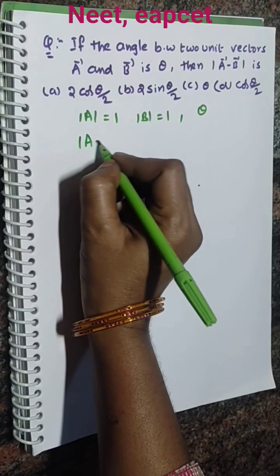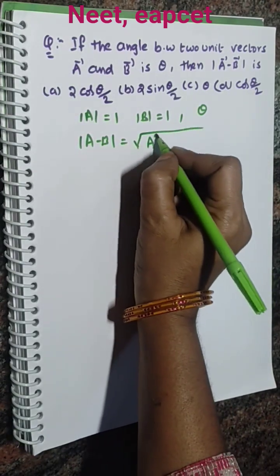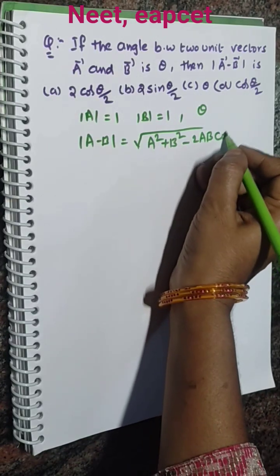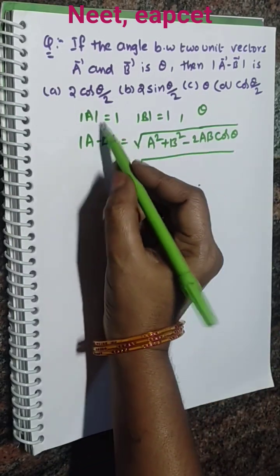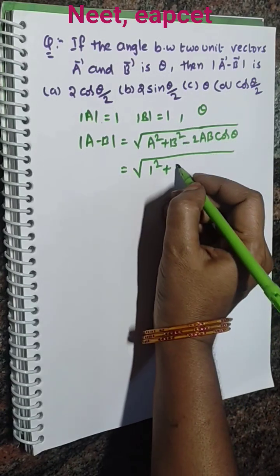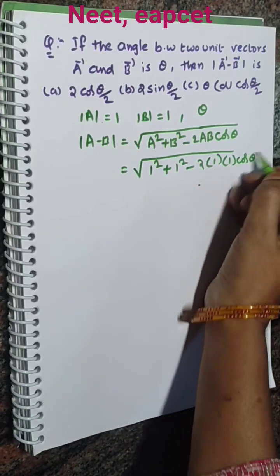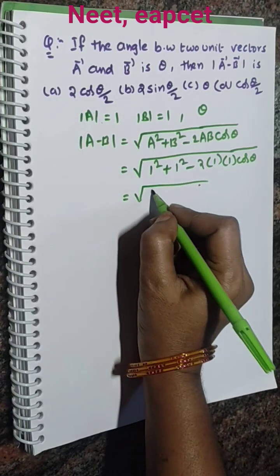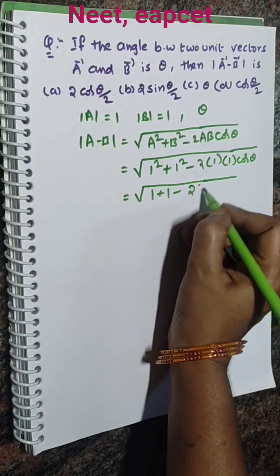So we can write modulus of A minus B equal to, you already know the formula, that is square root of A squared plus B squared minus 2AB cos theta. So that implies a squared becomes 1 squared plus b squared means 1 squared minus 2 times 1 times 1 cos theta. So this implies we get 1 plus 1 minus 2 cos theta.